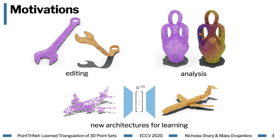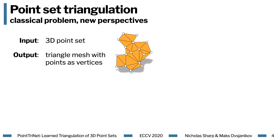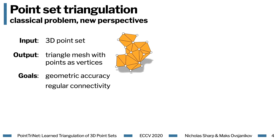To get there, we consider a problem formulation which hasn't been treated with deep learning before, namely point set triangulation. In point set triangulation, the input is a 3D point set, and the output is a triangle mesh which has those points as vertices. Generally, we want the result to be geometrically accurate and have regular connectivity too.